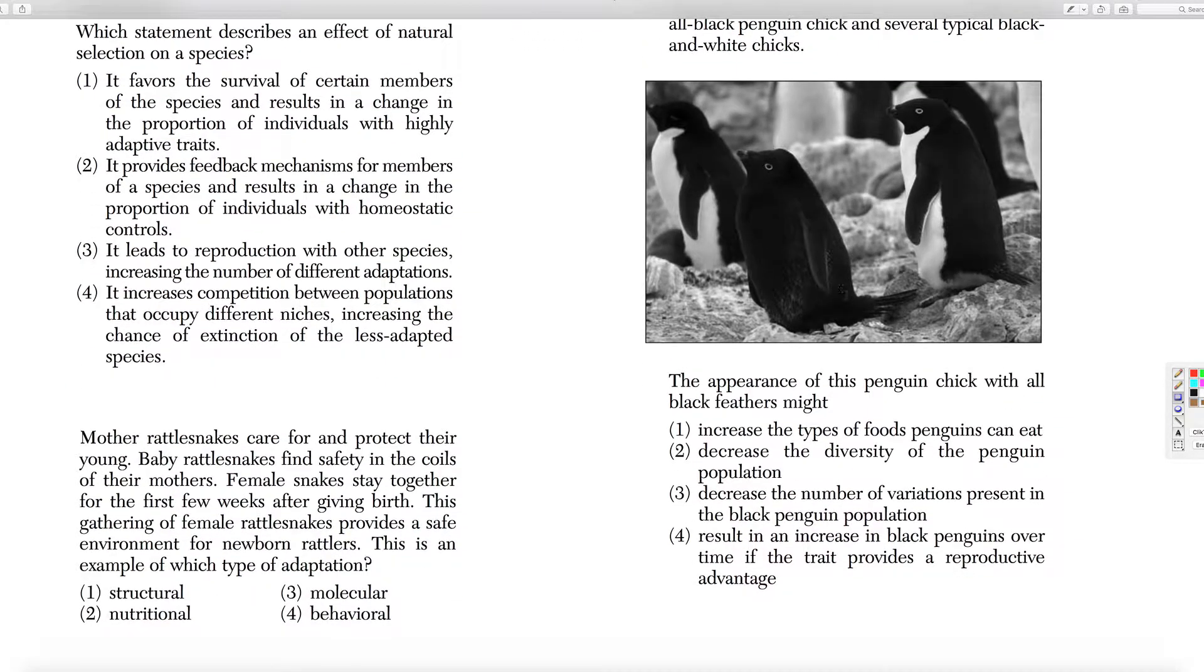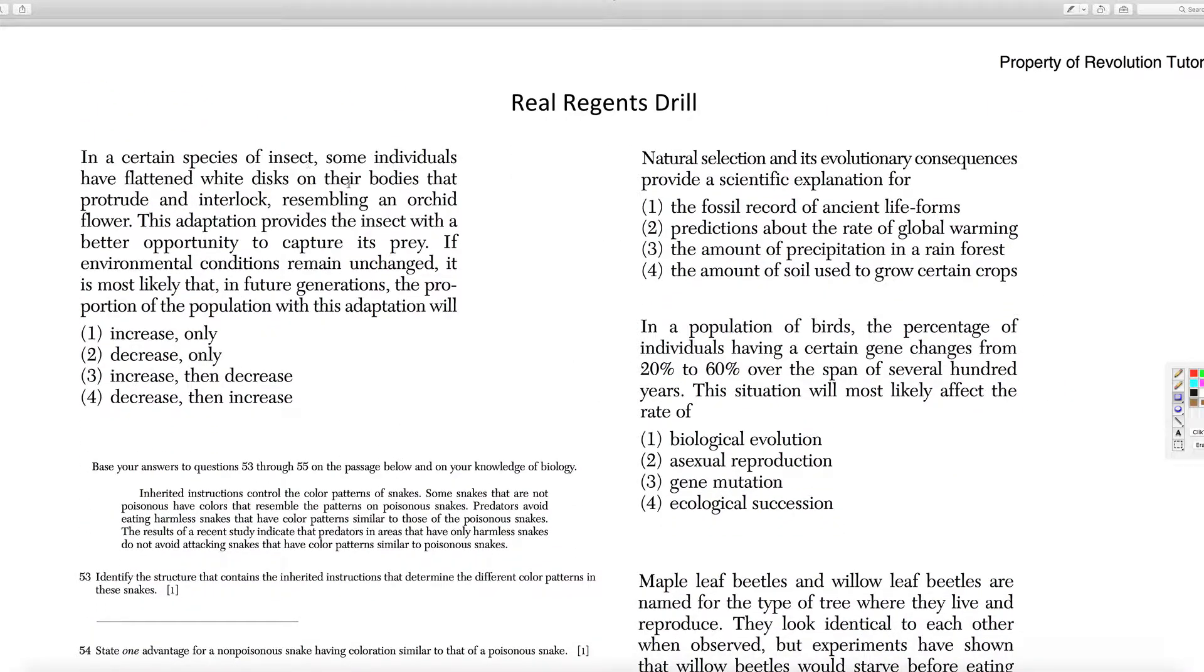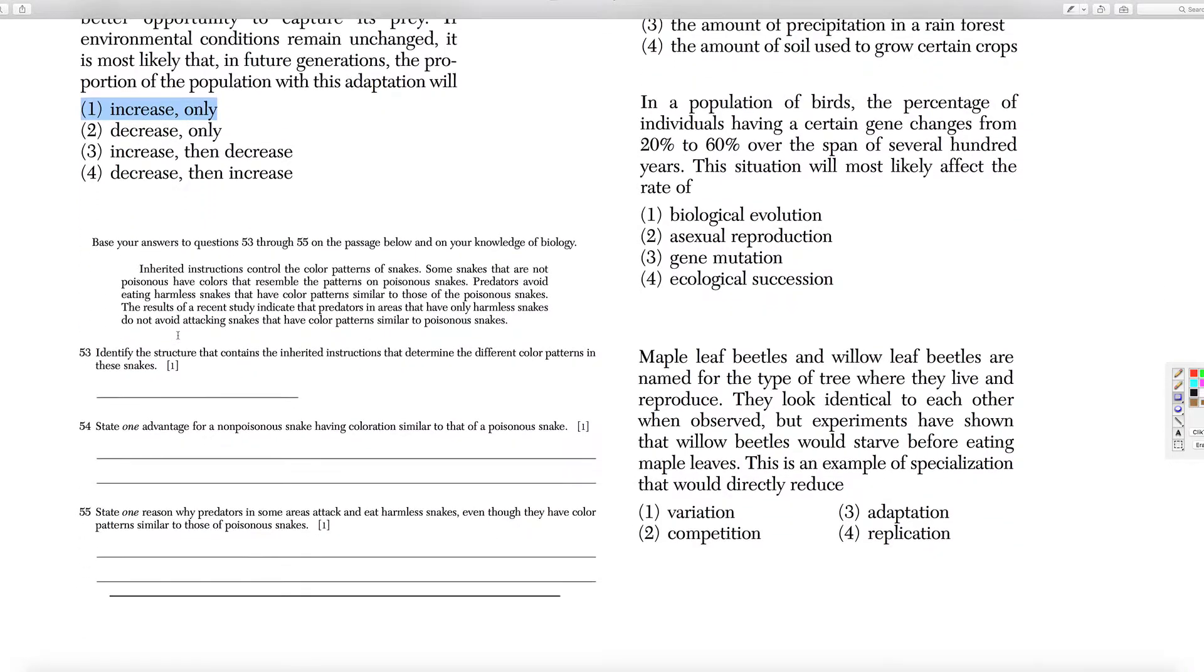The appearance of the one with all black may result in an increase in black penguins if it's good. Like, let's say for some reason they can't see the black or they think it's poison. They don't eat it. So it could end up being good. In certain species of insects, some individuals have flattened white discs on their bodies that protrude resembling an orchid flower. The adaptation provides the insects with a better opportunity to capture prey. If it remains unchanged, they're only going to increase. If it gives you a better chance to capture prey, then great.